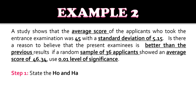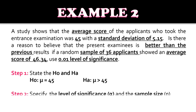For step one, we state the null and alternative hypotheses. The null hypothesis is: mean equals 45. The alternative hypothesis is: mean is greater than 45. We use greater than because the keyword in the problem is 'better than.' For step two, the level of significance is 0.01 as given in the problem, and the sample size is 36.